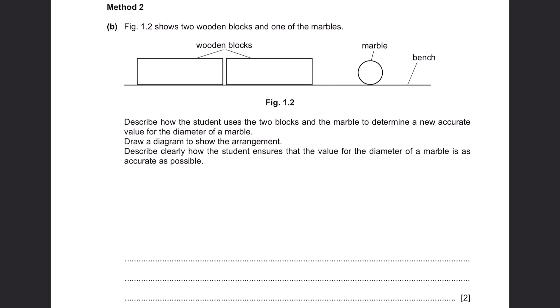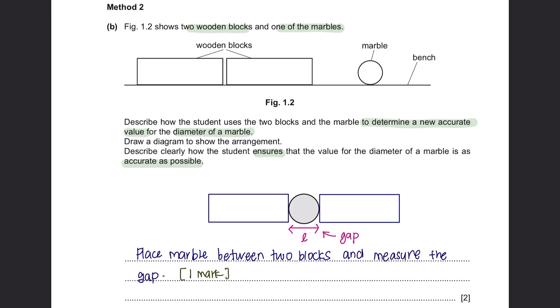Method 2. Figure 1.2 shows two wooden blocks and one of the marbles. Describe how the student uses the two blocks and the marble to determine a new accurate value for the diameter of a marble. Draw a diagram to show the arrangement. We are going to place the marble in between the two blocks and measure the gap to obtain the diameter. This will give you one mark. We also have to state another point to ensure that the value for the diameter is as accurate as possible. To do that, we will rotate the marble to different axes and take the average of measurements. This will give you your second mark.